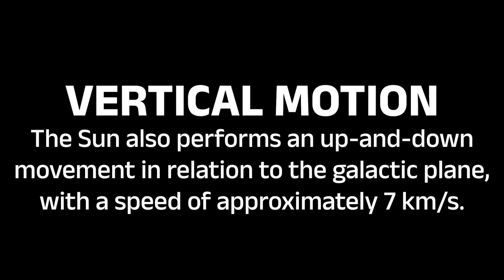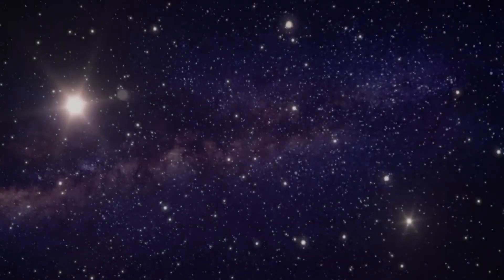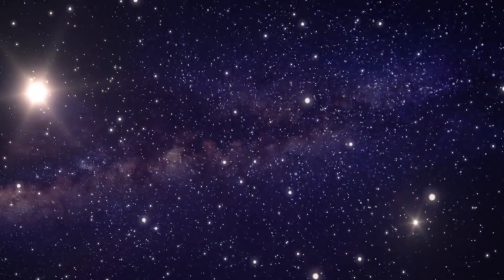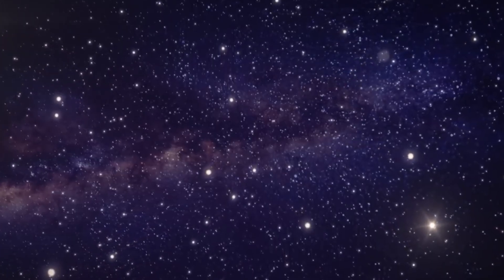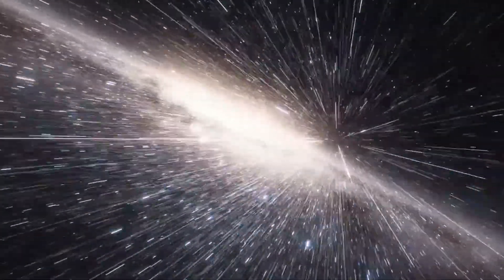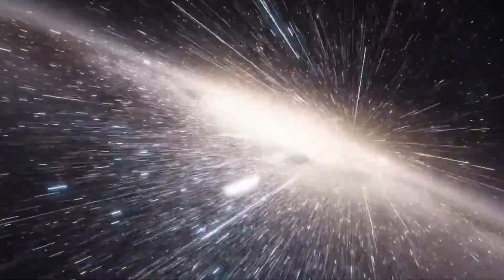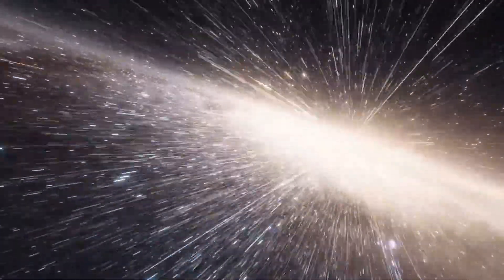Although these values seem small, when multiplied by millions of years, they generate gigantic distances. This combination of movements is known as the Sun's peculiar motion, and it directly affects the trajectory of our solar system over time.